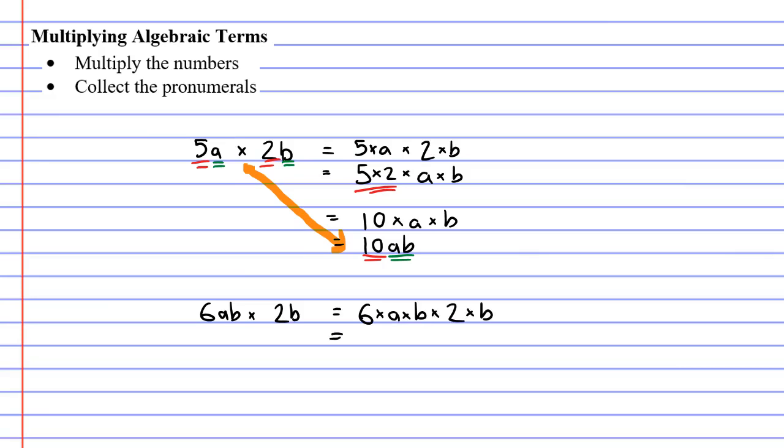If we then rearrange it and put the numbers first we get 6 times 2. And you'll notice that the pronumerals we have are a, b and another b. So we need to write that next to it. 1a and 2b all multiplied together.